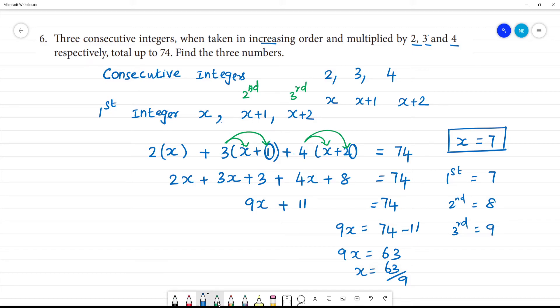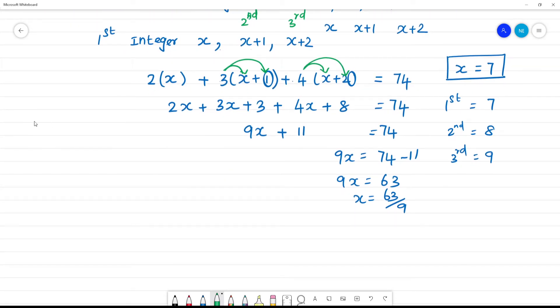Now let's verify. The first integer multiplied: 2 into x, that is 2 into 7, which equals 14. The second integer: 3 into x plus 1, x is 7 plus 1, that's 8. So 3 into 8, that equals 24.